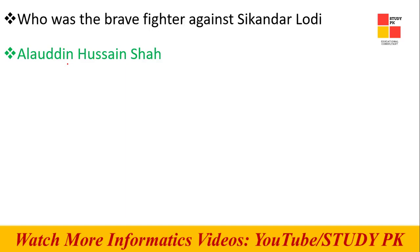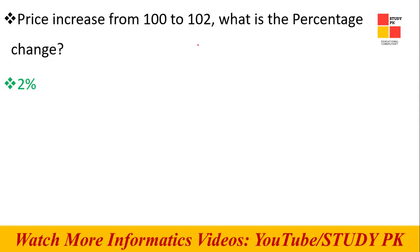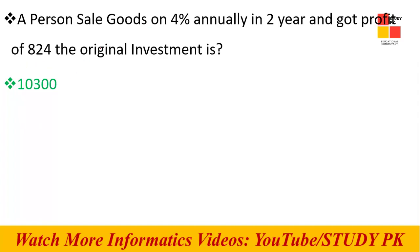Next: who was the brave fighter against Sikandar Lodi? The right answer is Alauddin Hussain Shah. Next, a math question: if price increases from 100 to 102, what is the percentage increase? The answer is two percent — that is the correct answer.